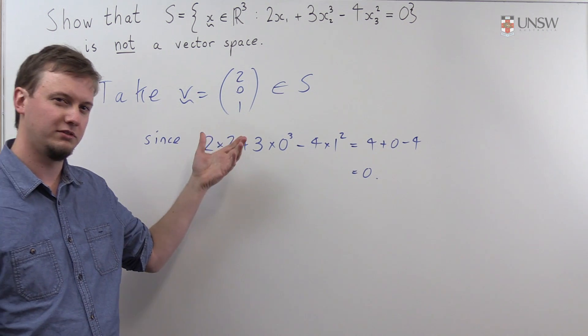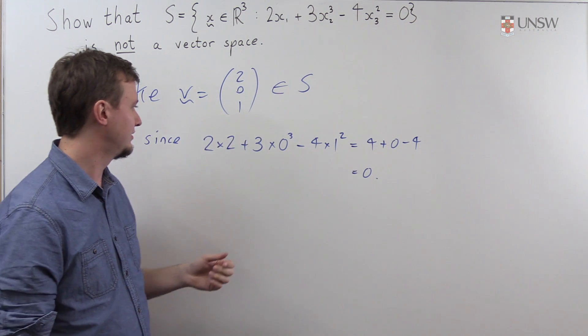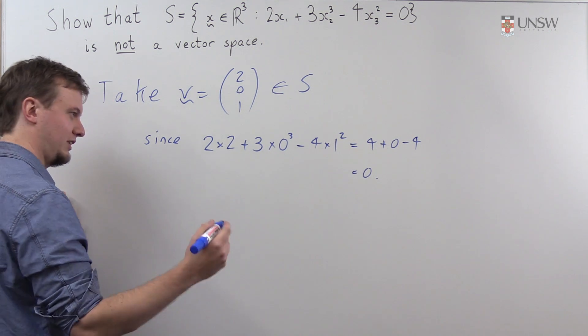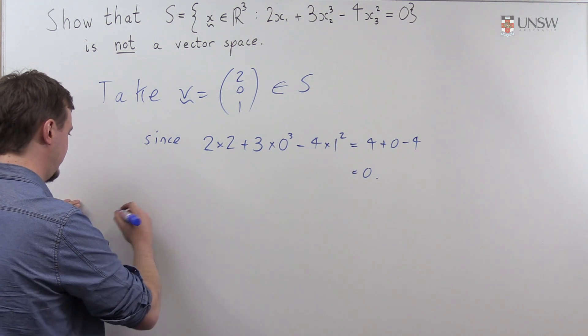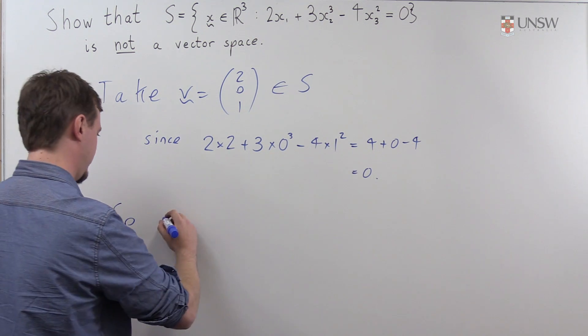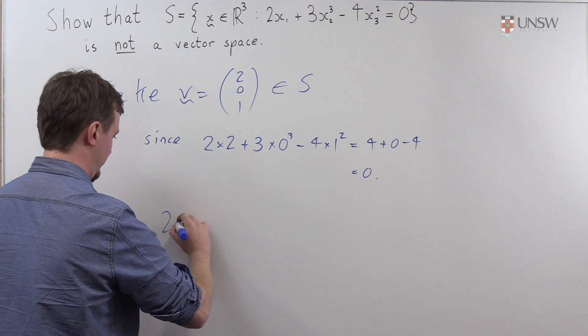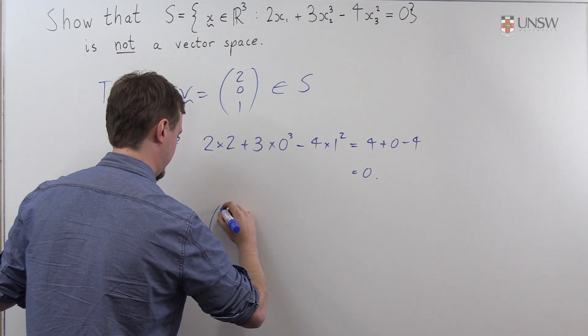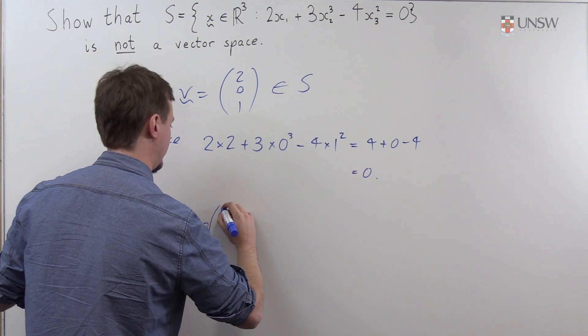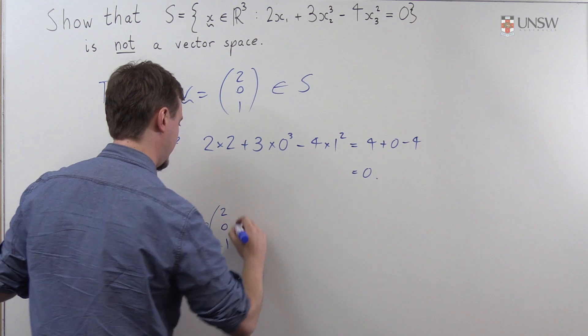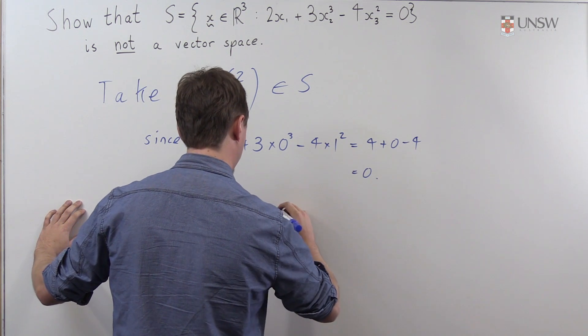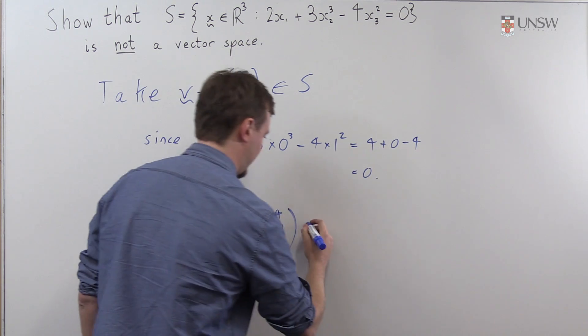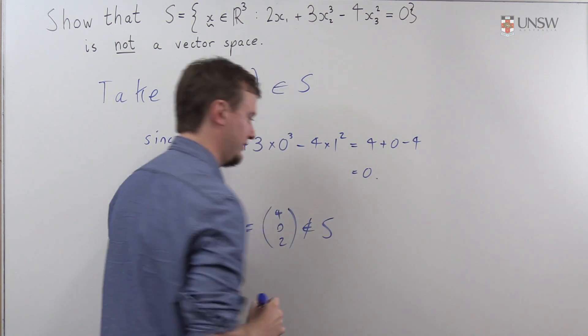So let's see what happens when we scale this vector. I'm going to take this vector and I'm going to scale it by 2, and you'll see that I end up with something which isn't in S. So 2 times V, we get 2 times (2, 0, 1), which is equal to (4, 0, 2),